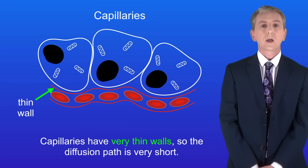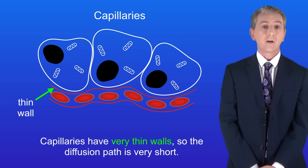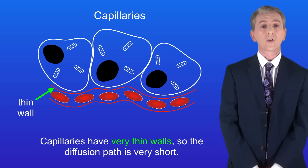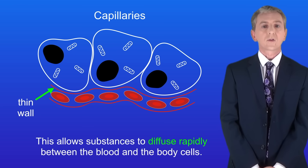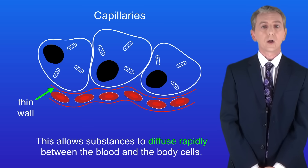Capillaries have very thin walls so the diffusion pathway is very short. This allows substances to diffuse rapidly between the blood and the body cells.